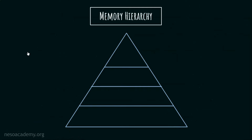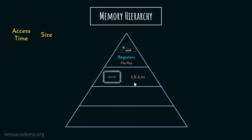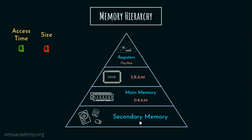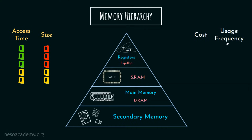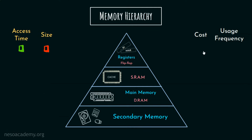If we consider access time and size, we can rank the memory units like this. Registers are made up of flip-flops and are embedded within the processor itself, therefore the time to access them is the least. The SRAM caches are next, followed by the DRAM main memory, and last but not least, the secondary memory storages. However, in terms of cost and usage frequency, this hierarchy is reversed — as we move up, the cost and frequency of usage increases.